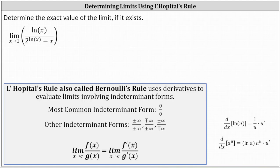Determine the exact value of the limit if it exists. Let's first see if we can determine the limit by performing direct substitution. To do this, we substitute one for x, which gives us natural log one divided by the difference of two to the power of natural log one and one.